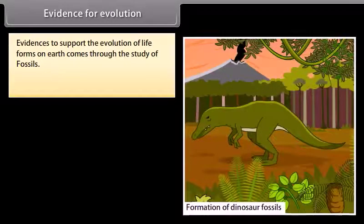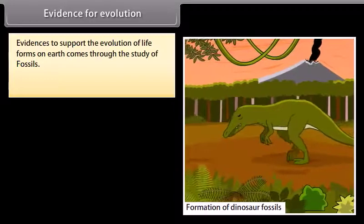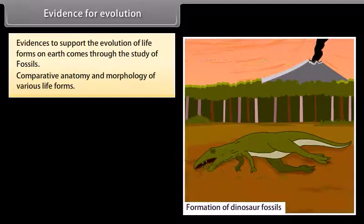Evidence for evolution. Evidences to support the evolution of life forms on Earth comes through the study of fossils, comparative anatomy and morphology of various life forms.